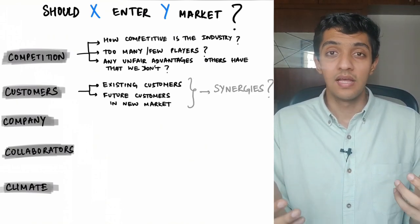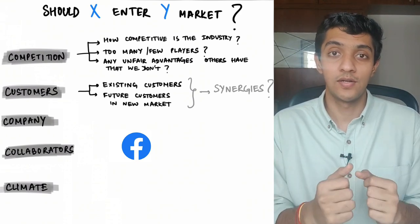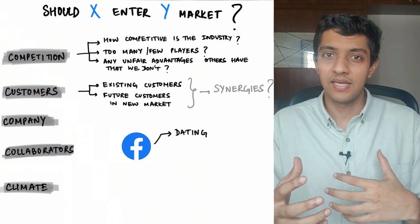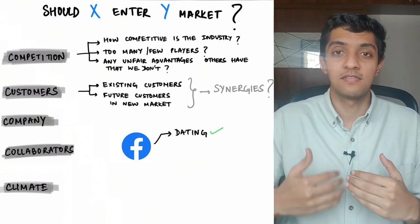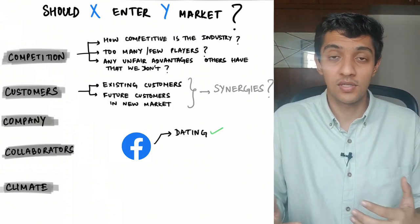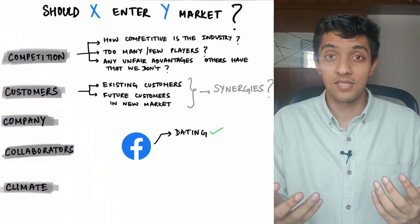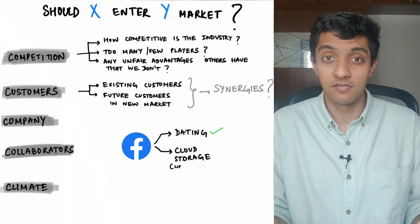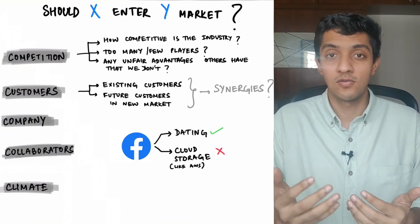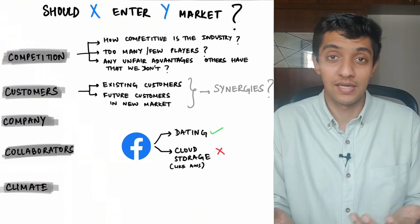As an example, if Facebook — the social networking app — decides to get into dating and build a dating app, it can still make the case that customers would have some synergies, because at the end of the day it's still social and it still connects people. But if Facebook decides to get into the cloud business like Amazon Web Services, it wouldn't really make sense, because no customer who wants to purchase cloud storage is going to trust Facebook with their data.